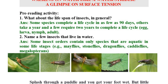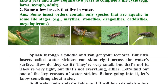Name a few insects that live in water. Here are the names of water insects: first, mayflies; second, stoneflies; third, dragonflies; fourth, caddisflies; and last, megalopterans.